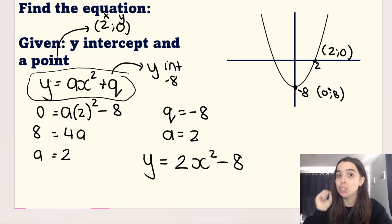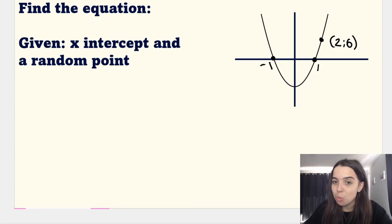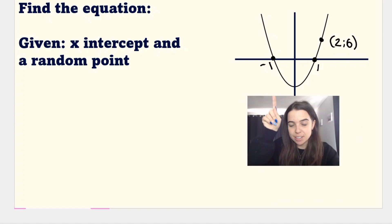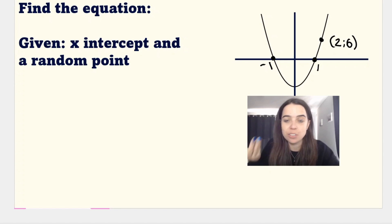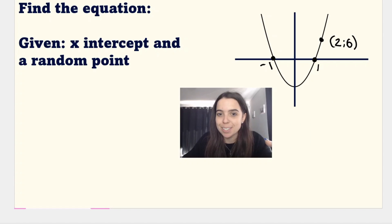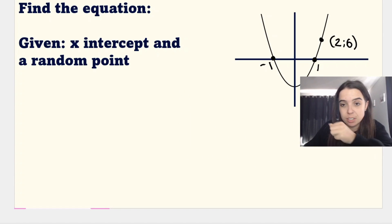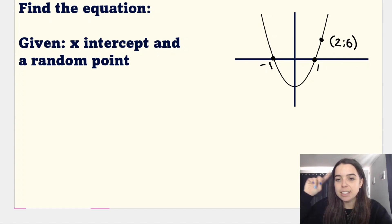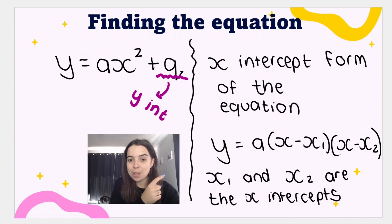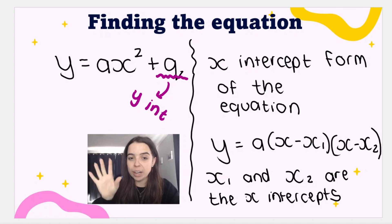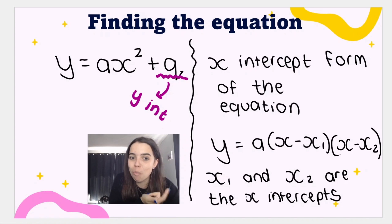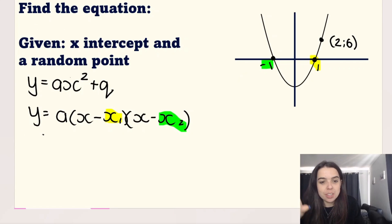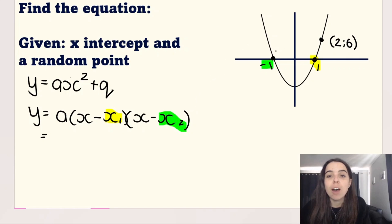Let's have a look at example number 2. This is different from example number 1 because we are not given a y-intercept — that coordinate is not given to me. What I do have, however, are my x-intercepts and what we call a random point, not an intercept. The first thing you need to remember is the x-intercept form of the equation. You need to memorize this: y equals a times (x minus x1) times (x minus x2), where x1 is one x-intercept and x2 is the other x-intercept.